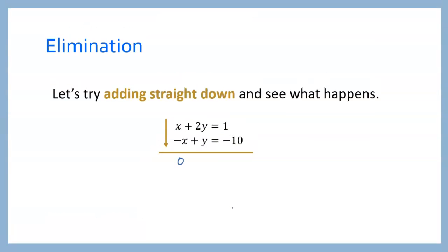On the right side we have 1 minus 10, that's going to be negative 9. So we have 3y equals negative 9. Now we only have one step to get to y — we just need to get rid of this 3. We're going to divide both sides by 3 since that's the opposite operation. The 3s will cancel and we get y equals negative 3.